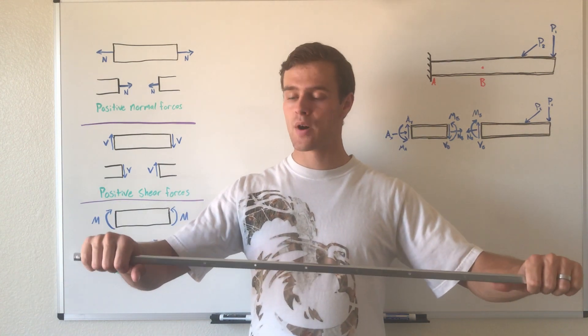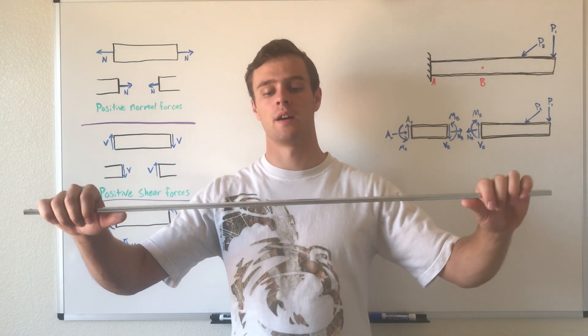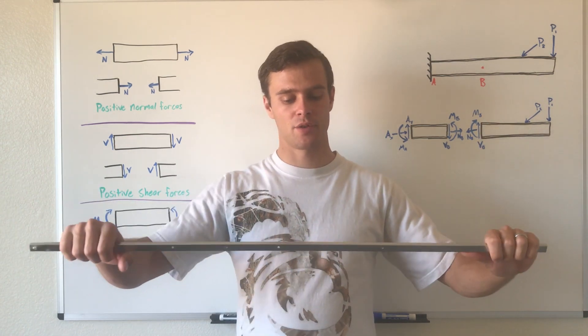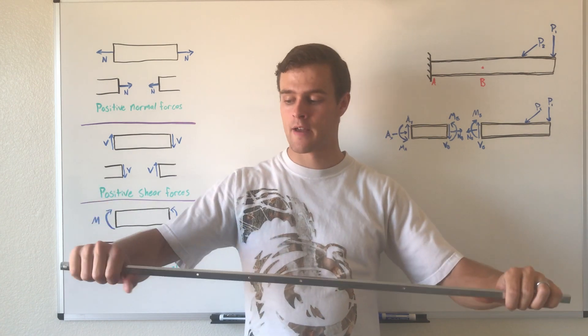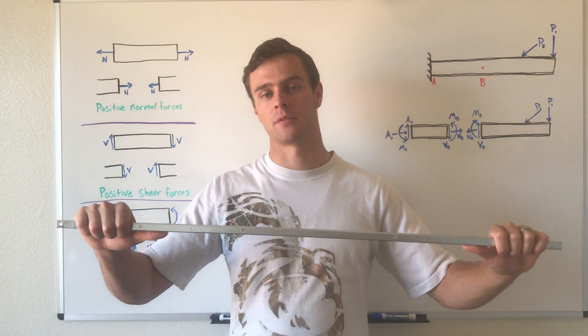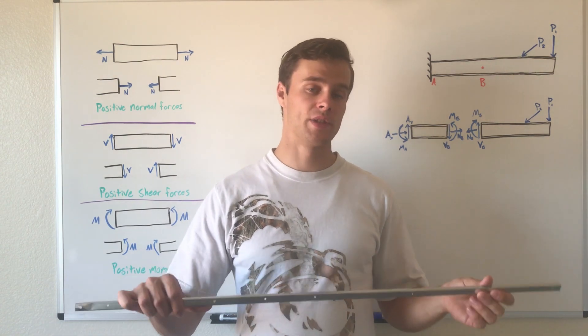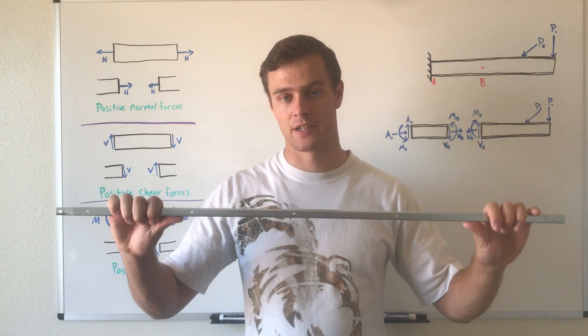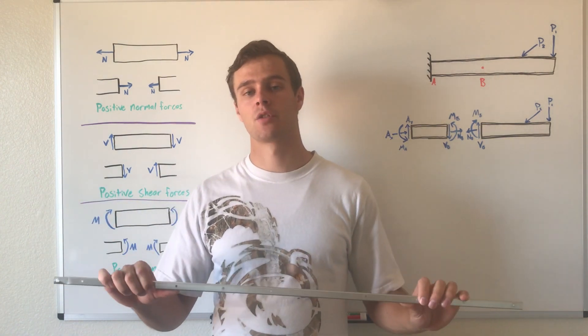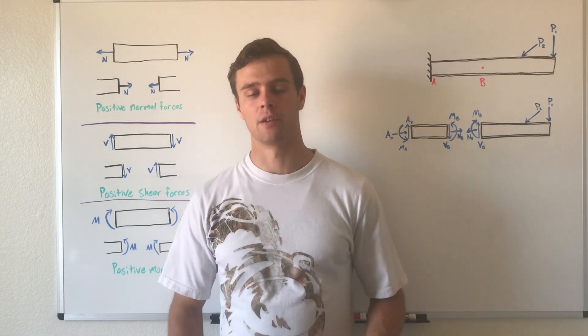The internal moments would be if I'm bending this like this—the internal moments in this member will be pushing it back down so it won't bend. The way I can bend it is by bending it hard enough that the internal forces can't resist, and the rod will actually deform. But they're going to resist that bending. That's how this object doesn't just bend with little or no force. The internal forces or moments are resisting that movement, and that's how it can be in equilibrium.